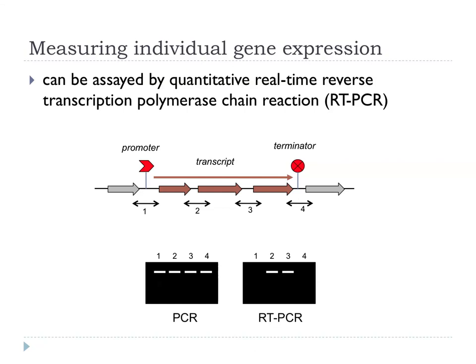For measuring individual gene expression, the simplest way is reverse transcription PCR, RT-PCR. If you have a simple operon with a promoter, terminator, and three coding sequences, and you do PCR with primers spanning junctions between genes, you get different results from cDNA versus genomic DNA. With genomic DNA all primer pairs work; but if you get rid of the DNA, look at RNA, and reverse transcribe it, only the primer pairs within the transcript will give you products. This is a very easy way of saying is there a transcript, where is it going, which genes are in an operon and which ones are not.